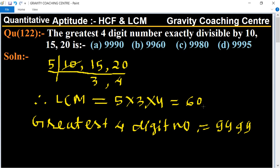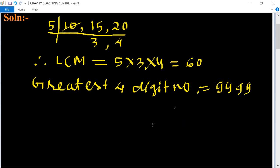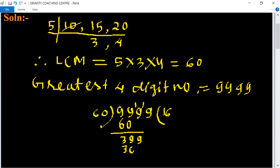So 9999 divided by 60. 60 goes into 99, 9 times. 6 times 9, 36, 0.